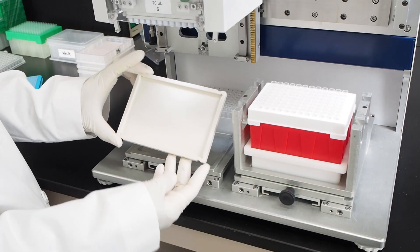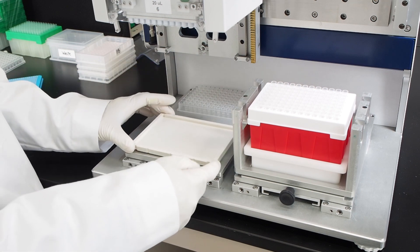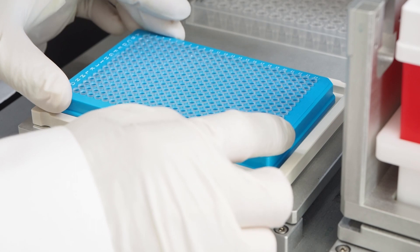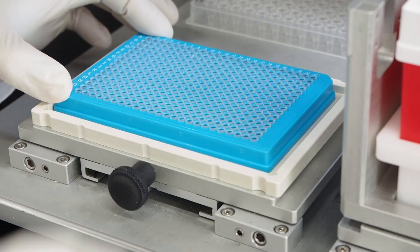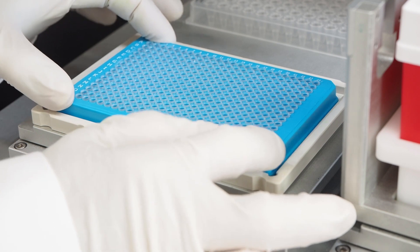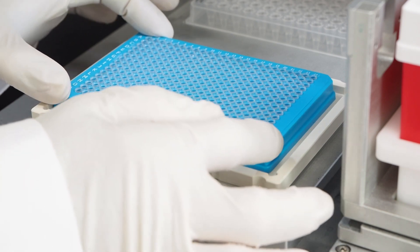The white 384 well plate adapter fits snugly into any of BenchSmart's four tray positions. Place a 384 well plate on top of the white adapter. It can be moved into each corner of the adapter so there are four distinct secure positions for the plate.